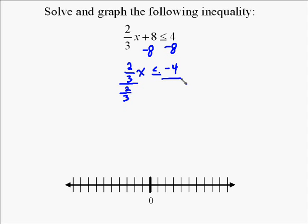To get x by itself, you always divide by what's out in front of it, so we divide by 2 thirds. So we have x less than or equal to negative 4 divided by 2 thirds.